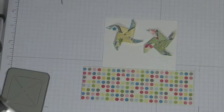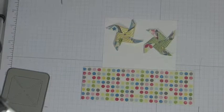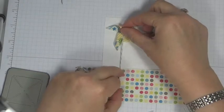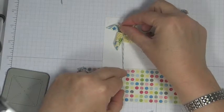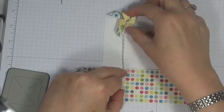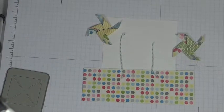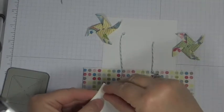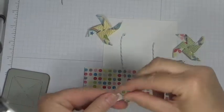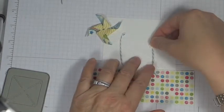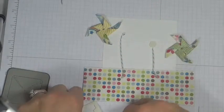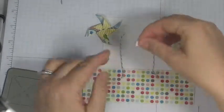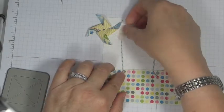But I am going to lay it down here so I know exactly how long to cut my baker's twine. I've got some Island Indigo baker's twine that I'm going to cut. Okay at this point I've got my twine laid out.